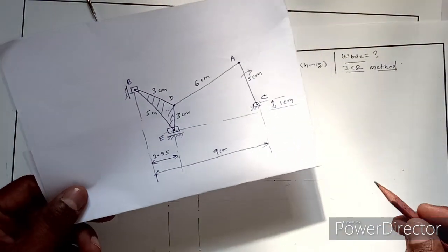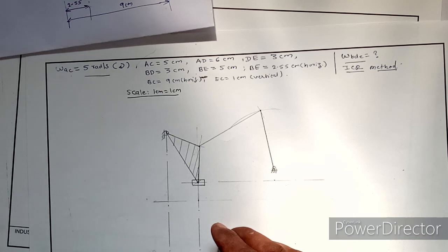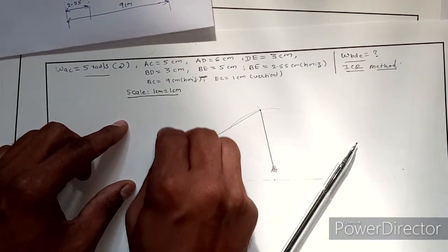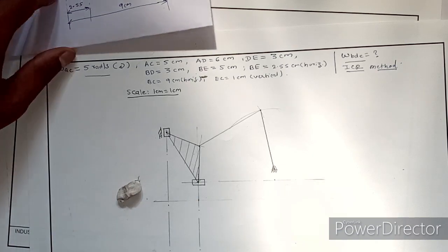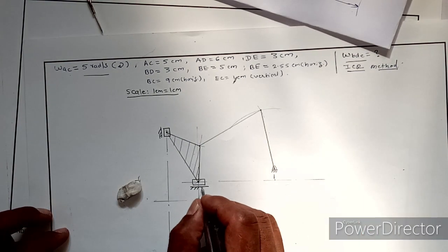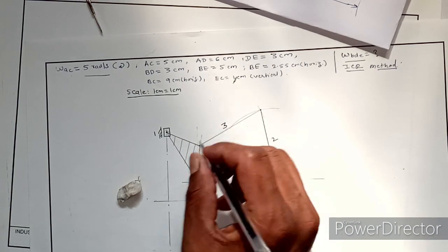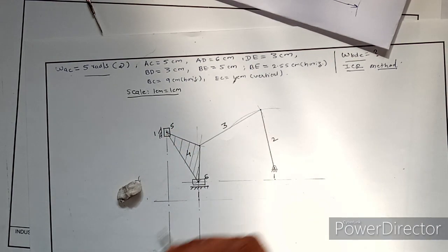In the ICR method we do not name pin joints; we number the links starting from the fixed link. The fixed link is link number 1, link AC is link number 2, the connecting link is number 3, the ternary link BDE is link number 4, the slider at B is link number 5, and the horizontal slider is link number 6. So there are 6 links in total.